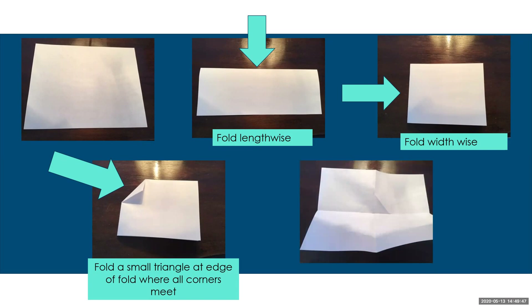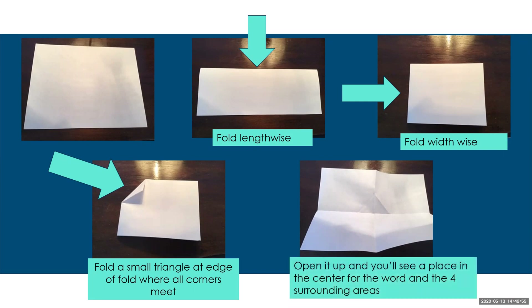Next, we take the edge of the fold where all the corners meet and fold it down into a small triangle. When you open your paper, it looks like this — there's an area in the center for you to write the vocabulary term, as well as four surrounding areas where you can identify the definition in the child's own terms, facts and characteristics, examples, and non-examples. You can draw around the lines if that makes it easier, and it literally takes about 30 seconds to make one.